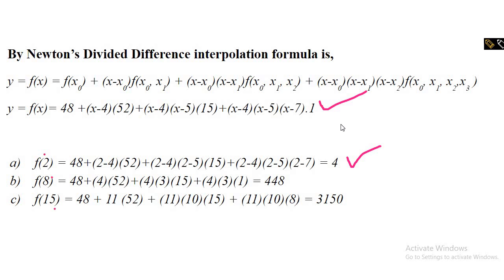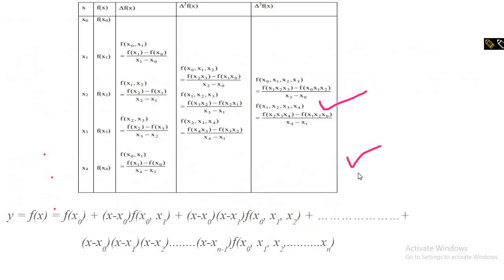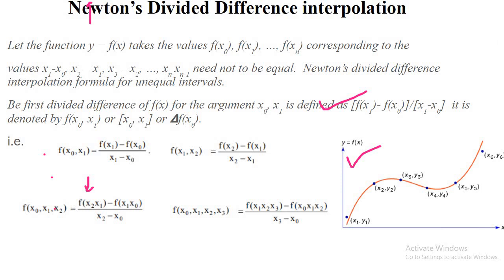So this method is known as the divided difference method. In the divided difference method, we first find the divided differences, then construct the polynomial. From this polynomial we can predict interpolated values, and we are also able to get extrapolated values — outside the given range, but not very far from it.